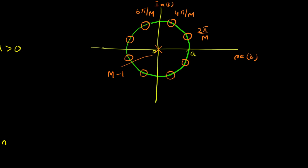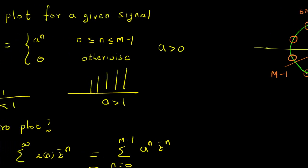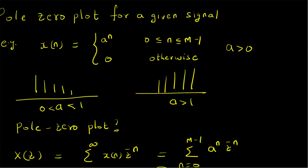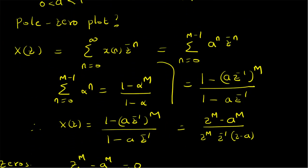To summarize, we have done a pole-zero plot for a given signal defined as x[n] = a^n for n between 0 and M-1, and 0 otherwise. When a is between 0 and 1 it is a decaying signal within the window; if a is greater than 1 it is a growing signal within the window. To construct the pole-zero plot we need the z-transform, which is found to be X(z) = (1 - a·z⁻¹)^M / (1 - a·z⁻¹).